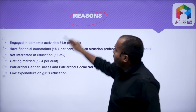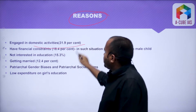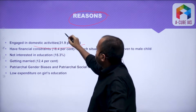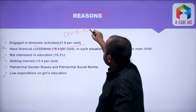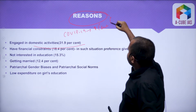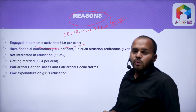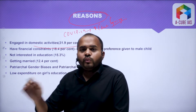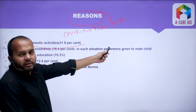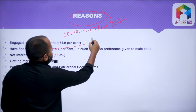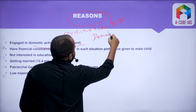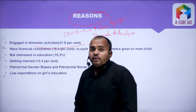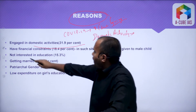What are the reasons behind this dropout? A major reason is engagement in domestic activity — 31.9% of women are engaged in domestic activity. COVID-19 has led to an increase in caregiving work. Everyone was on holiday except women, because they had to provide caregiving work. As domestic activity increases, this disincentivizes girls from going to school and leads to them dropping out.